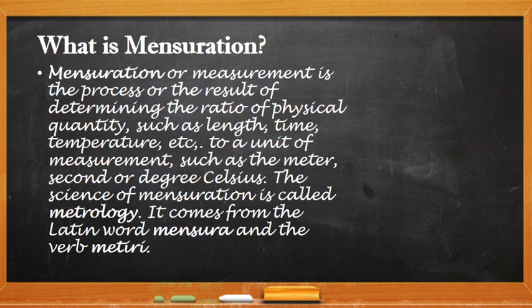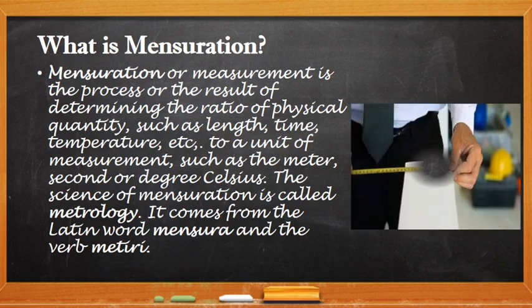Mensuration is just a process of getting the measurement of any quantity. For example, we want to get the length of an object, so we will find the quantity which is a number then pair it up with a unit which is meter. For example, if we measure the length of a table, then we get the quantity as one and the unit is meter. So what we are now doing is mensuration.